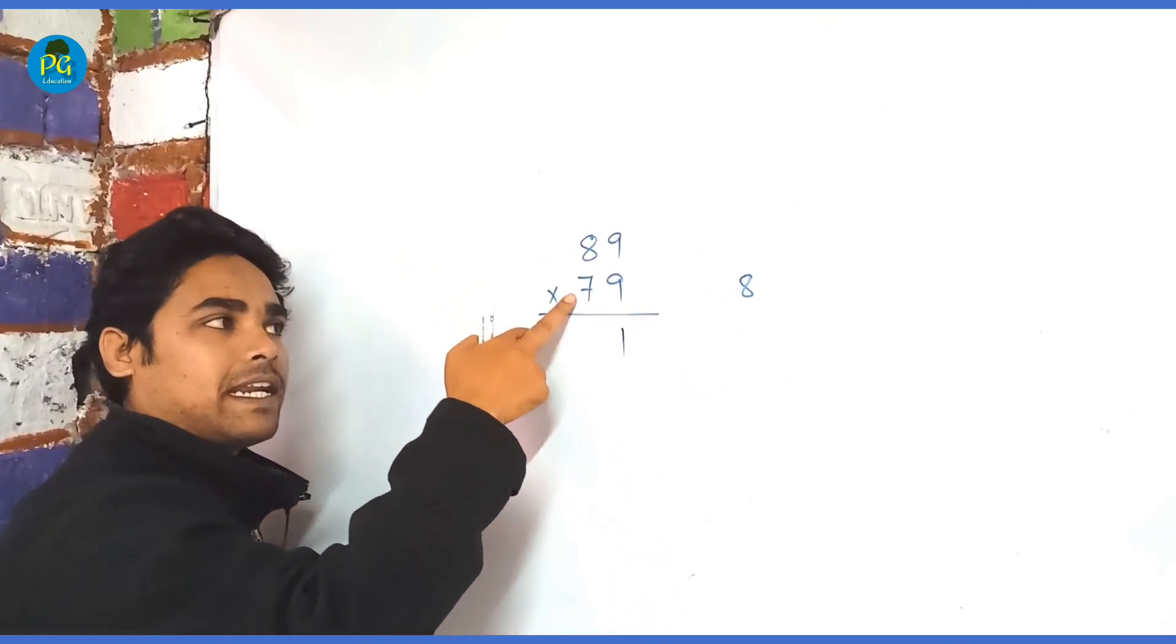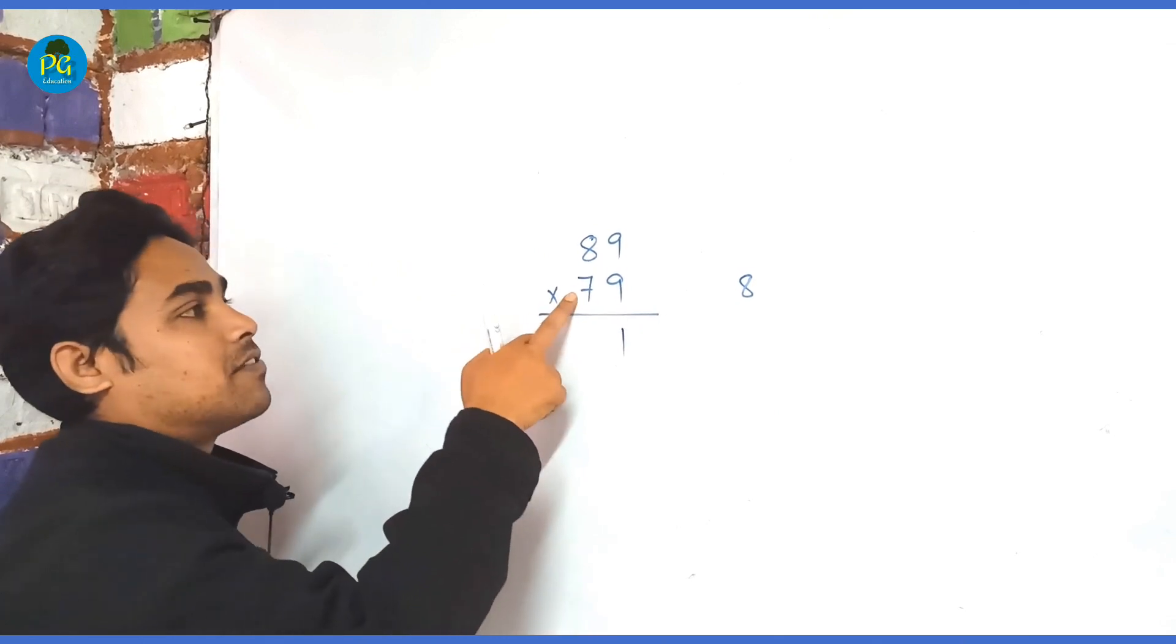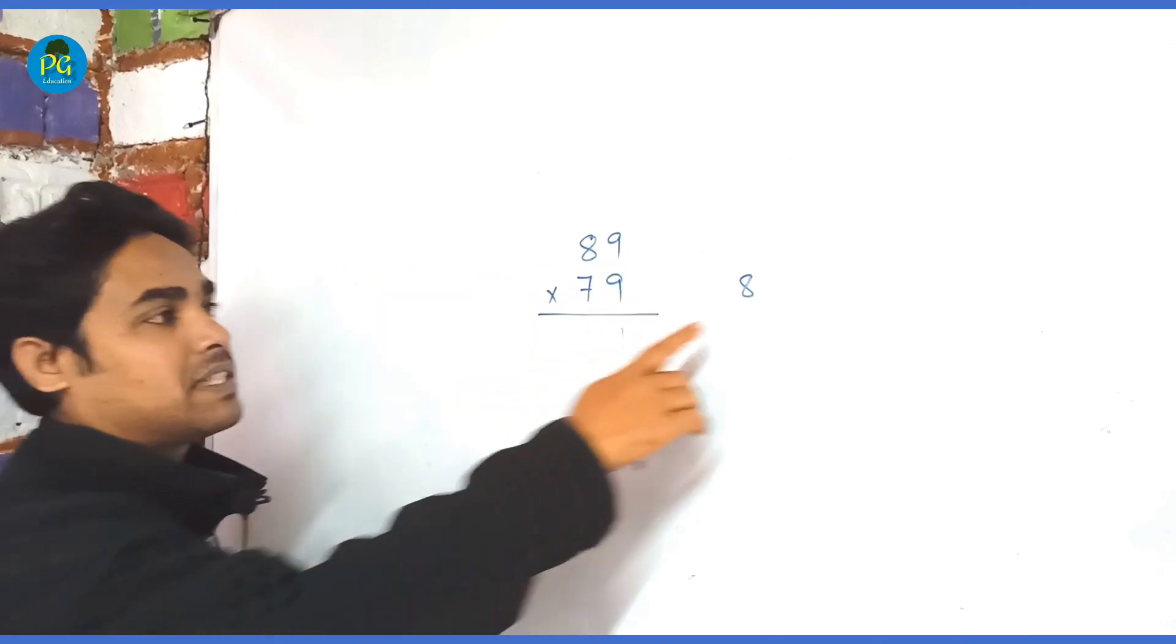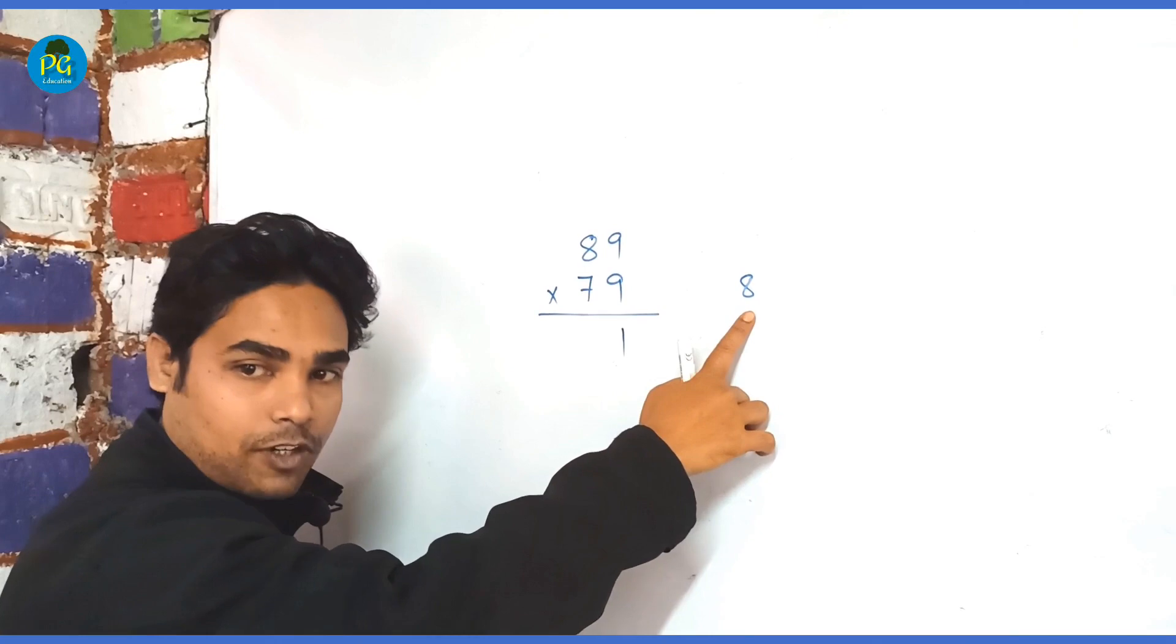Now you add 8 and 7, how much? 15, 15 into 9, 135 plus 8, 143.